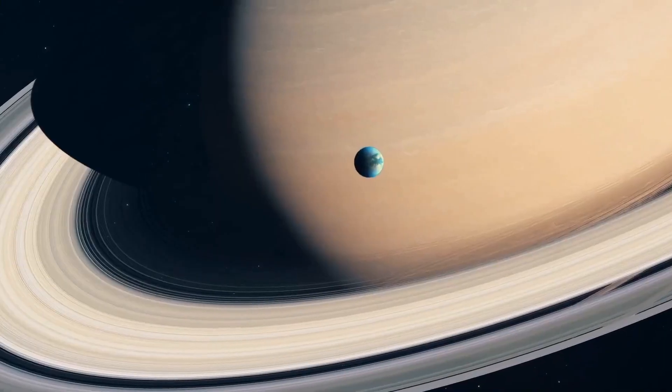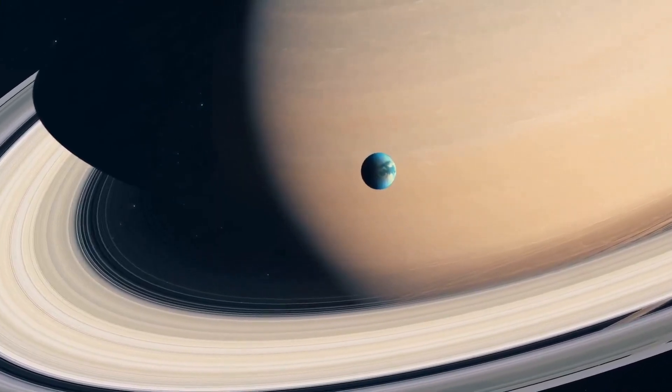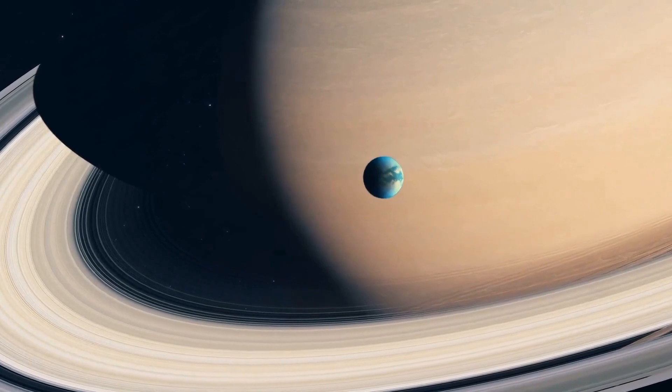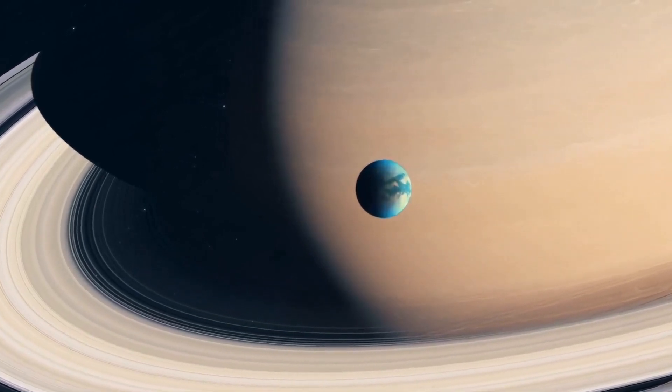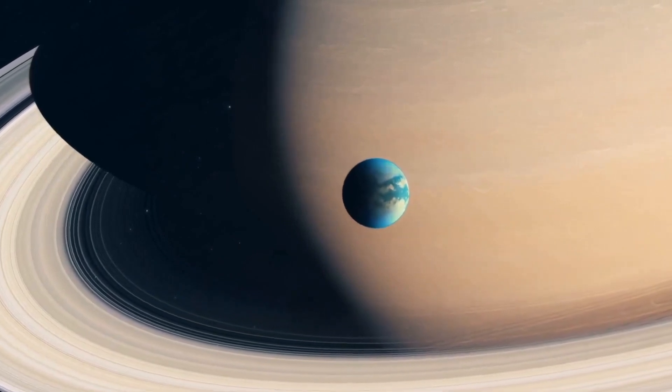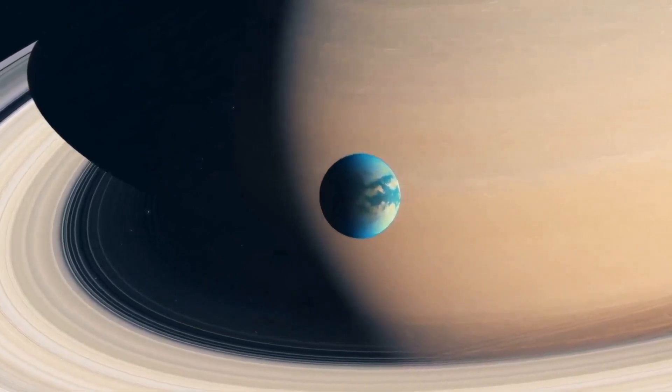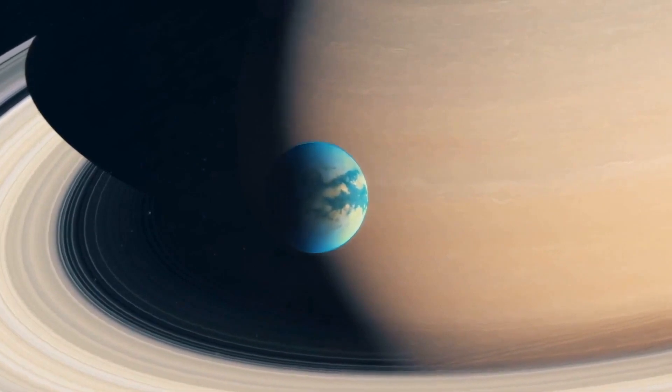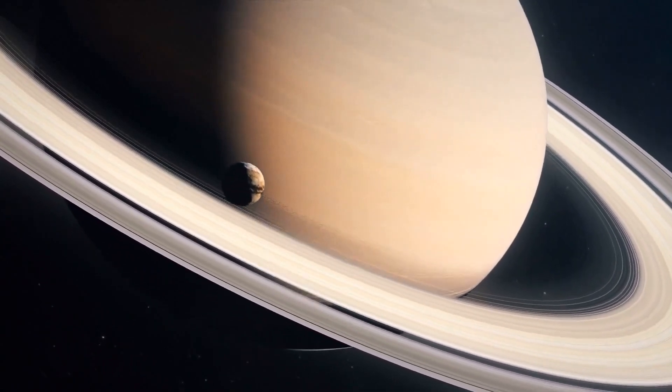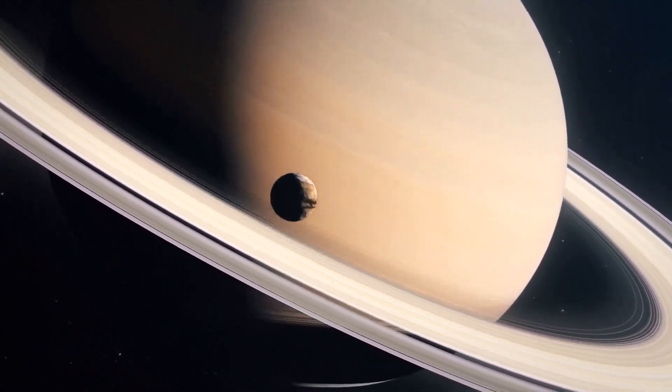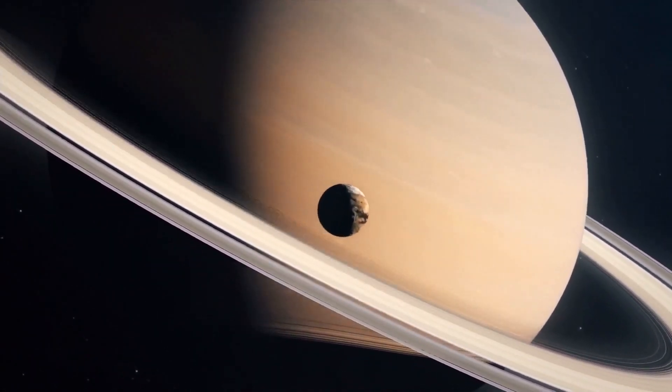Moreover, the telescope's ability to study Titan, one of Saturn's peculiar moons, yielded astonishing results. Titan, with its Earth-like characteristics, features an icy landscape with rivers and seas filled with liquid methane and hydrocarbons. The telescope observed methane clouds on Titan, revealing bright and dark areas on its surface, sparking further fascination and research opportunities.